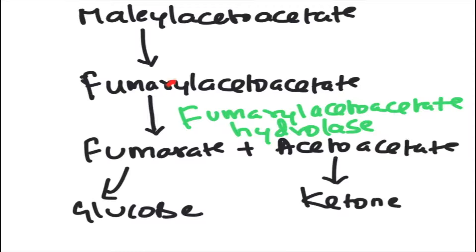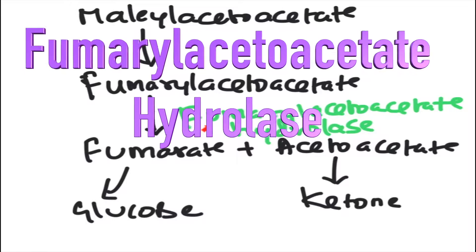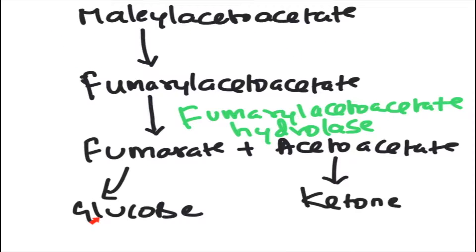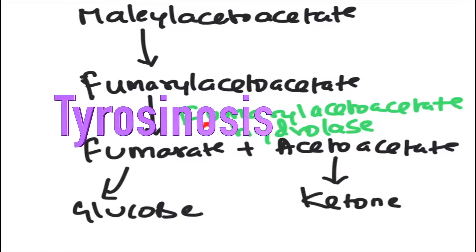Maleylacetoacetate is converted into fumarylacetoacetate by maleylacetoacetate isomerase enzyme — there is not much clinical application for this enzyme. Fumarylacetoacetate is then converted into fumarate and acetoacetate by fumarylacetoacetate hydrolase enzyme. Fumarate can go into glucose formation and acetoacetate can go into ketone body formation. If there is a defect or deficiency of fumarylacetoacetate hydrolase, it gives rise to type 1 tyrosinemia.